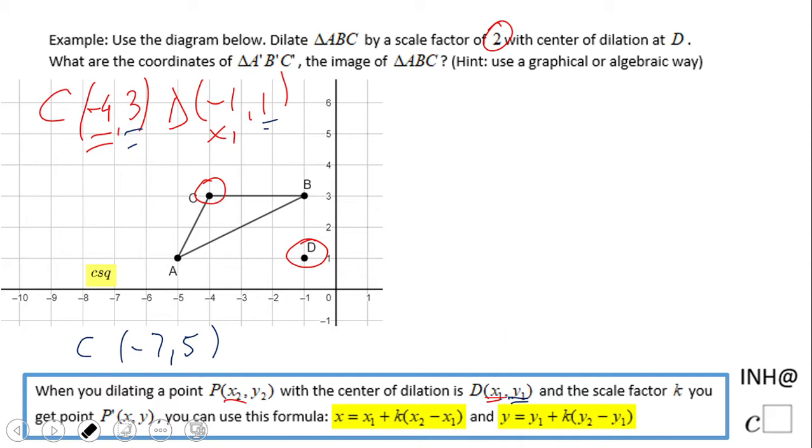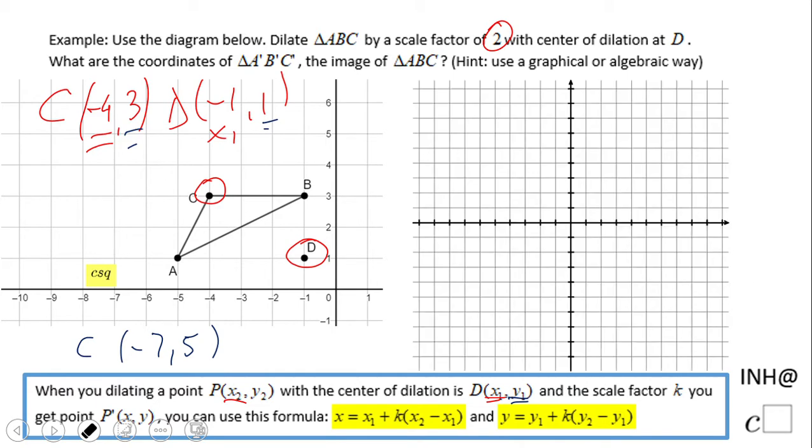The scale factor is 2, so graph paper will be helpful. I'm going to plot point D. With a scale factor of 2, you count from the center of dilation—count one, two from D to get the dilated points.